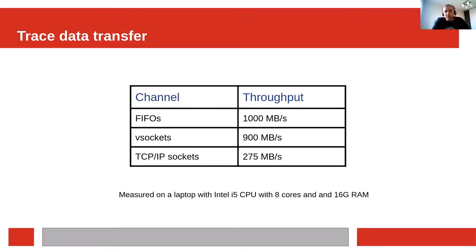Depending on the trace configuration, number of trace CPUs, and number of machines, gigabytes of trace data can be generated each second. This data must be transferred to the host during the trace and saved in files. A few methods were tested and compared, each with its own pros and cons. Numbers in that table were measured on an 8-core Intel i5 CPU with 16 gigs of RAM. Using TCP/IP is the most generic and universal solution, which can be used in any environment and does not require any support from the hypervisor, but it is too slow as the data passes through the whole IP stack. This solution also has security concerns as anyone could access the open TCP port. FIFOs and V-sockets have similar performance, though FIFOs are slightly faster, and they have no security concerns like the TCP/IP solution.